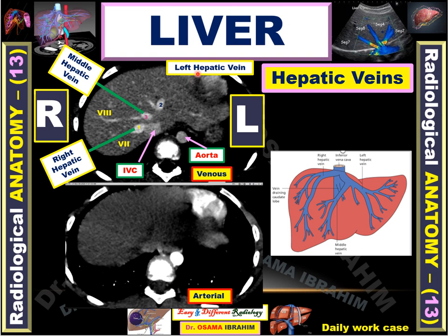The left hepatic lobe is divided into two segments: medial and lateral. The medial segment is segment IV, and according to the level — since this is the upper level — this is segment IVA. The lateral segment, which represents the lateral border of the liver, is segment II.